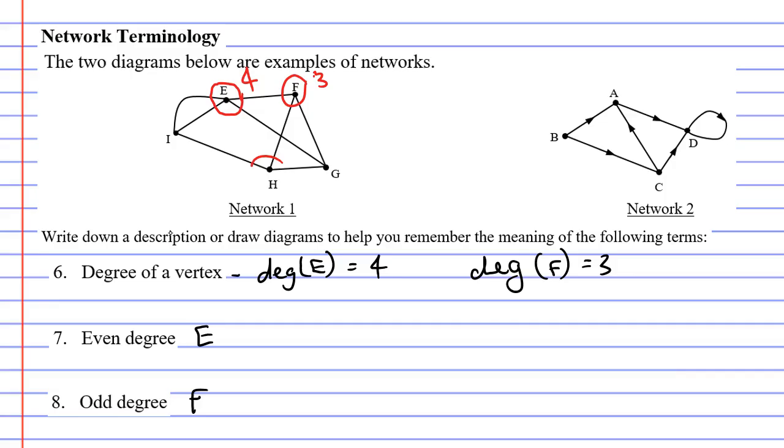And vertex F has an odd degree because three is an odd number. Vertex H has a degree of three. So that would go under having an odd degree. And if we look at vertex D you'll notice that there are four edges connected to it. So that we would say that that one has an even degree even though two of the edges connected to it are technically the same edge.